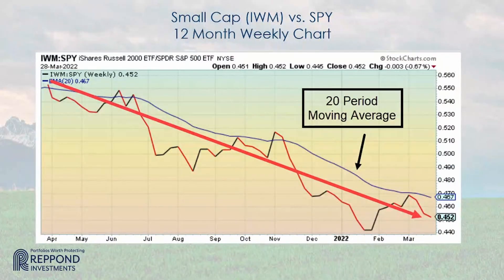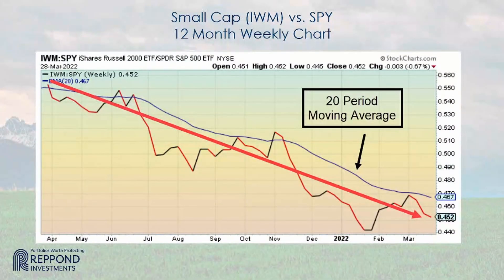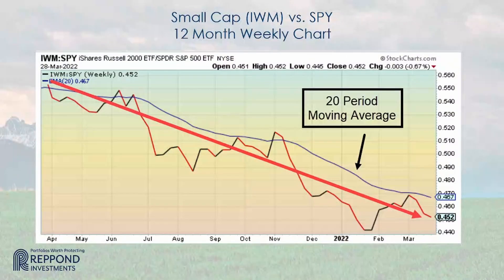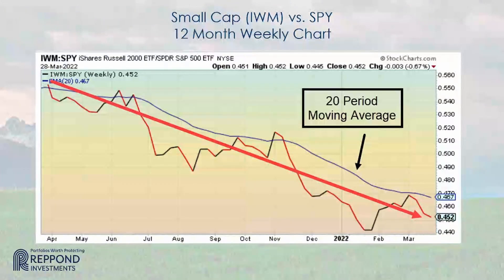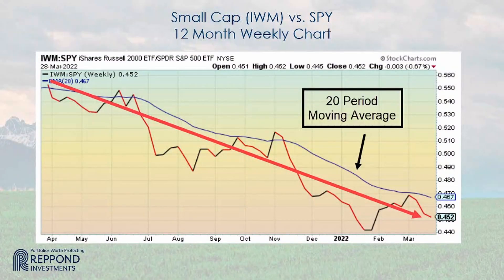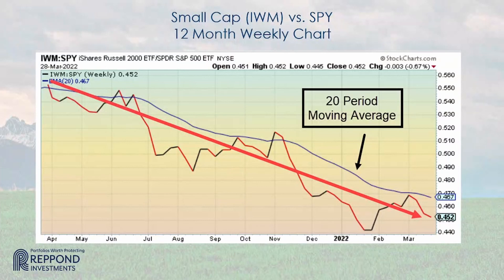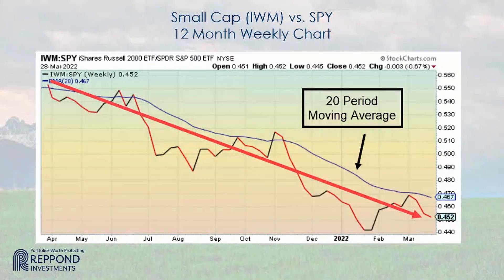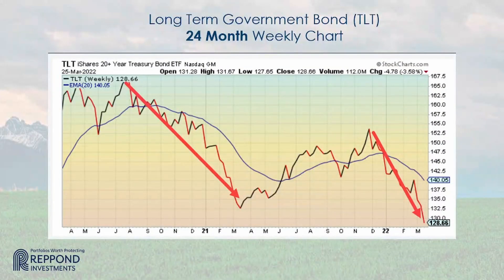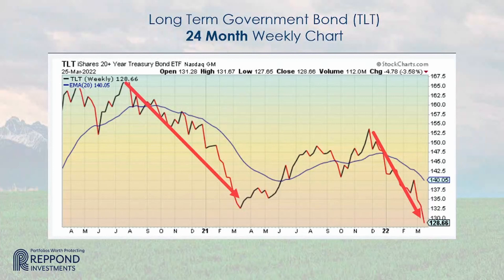This ratio chart shows the relationship of small-cap stocks — IWM, the Russell 2000 — to SPY, the S&P 500. For a year, small-cap stocks have underperformed whether the market is going up or down, and have nearly all of that time stayed below their 20-period moving average.